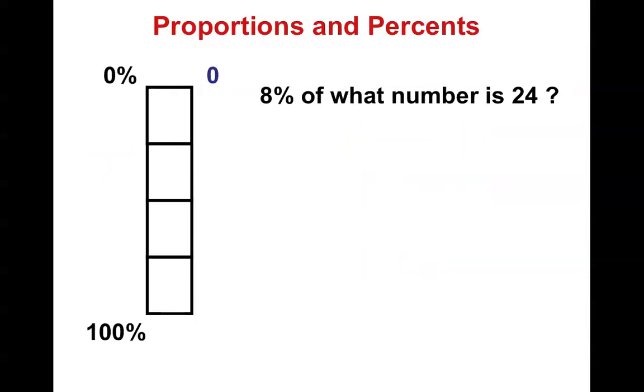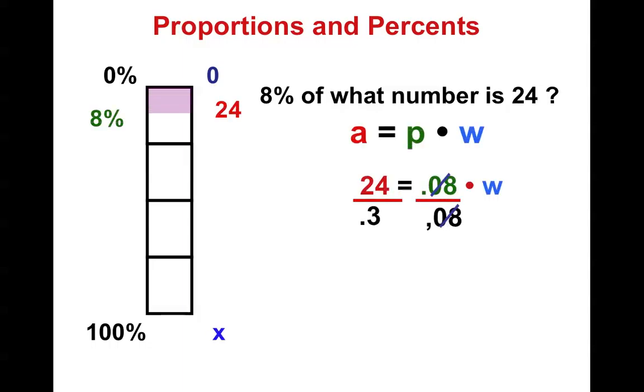You try. All right, we're back. So here we are. Divide by 0.08, divide by 0.08, and we get 300.